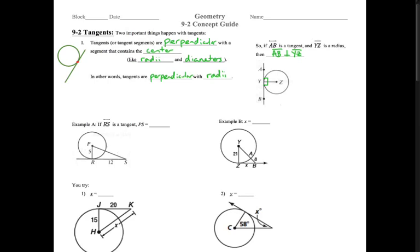Well, let's go straight to example A. If line RS is a tangent, and PR of course is a radius, it contains the center, so how can we solve for the length of PS? Well, there's a right angle there, that's what we just talked about, those are perpendicular, there's a right angle.